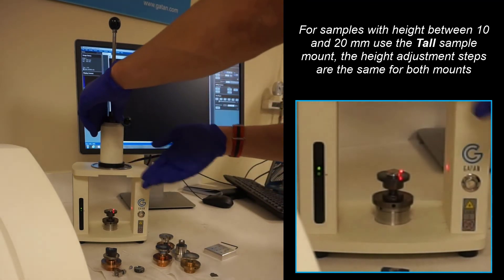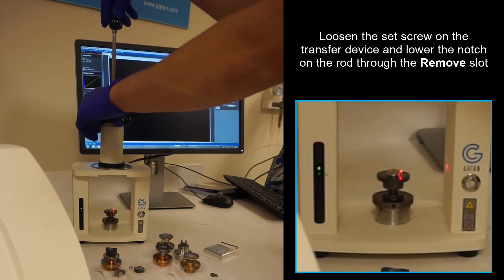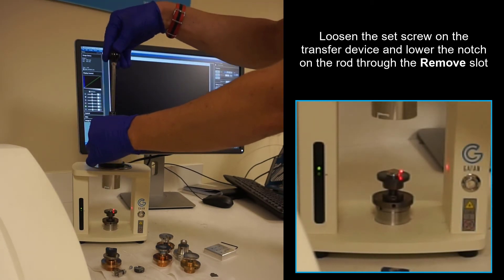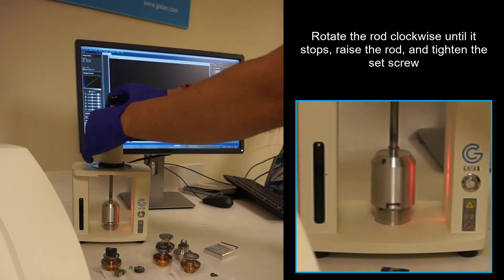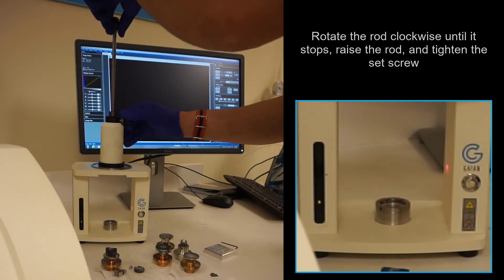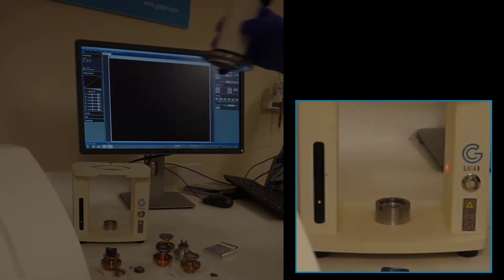Just like loading the alignment sample, we will now load this sample. Loosen the set screw, lower the shaft, pick up the sample, and now we're ready to insert the sample.